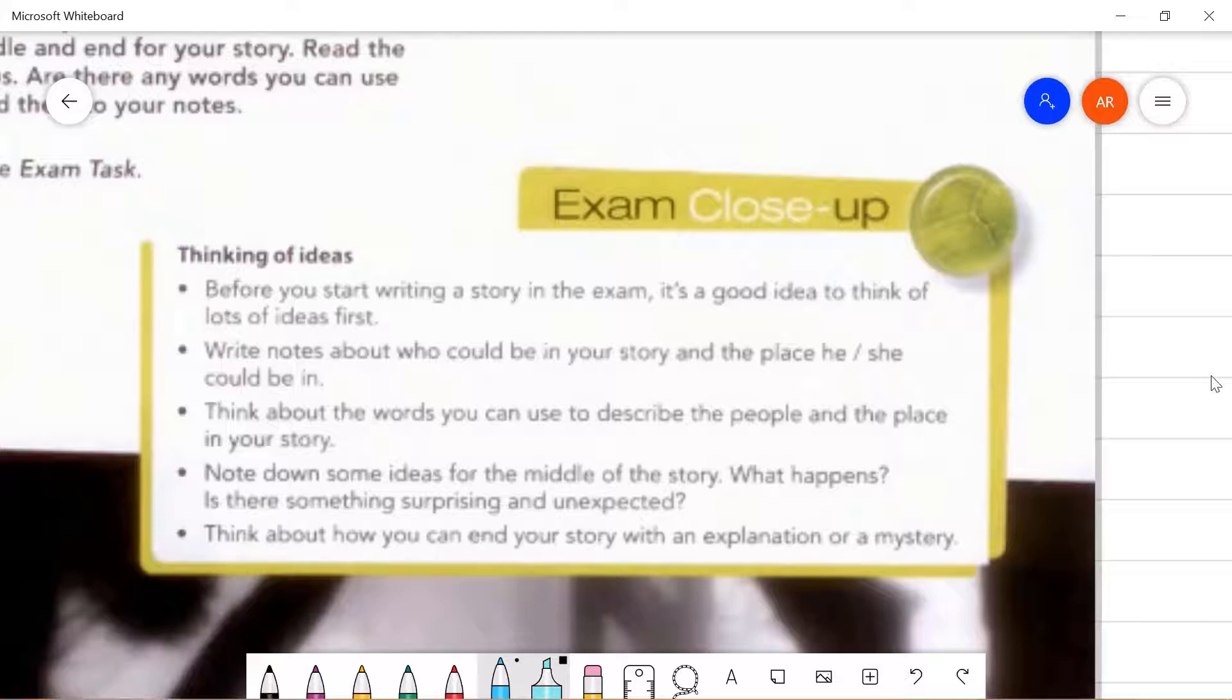Here are some tips on how to think of ideas. When you're thinking of your ideas, these are the tips that you could practice. The first one, before you start writing a story in the exam, it is a good idea to think of lots of ideas first. Normally before you write something, you have a lot of ideas in your head, right? So what you should do is just jot down your ideas on a piece of paper, scramble it, so that you don't lose it.